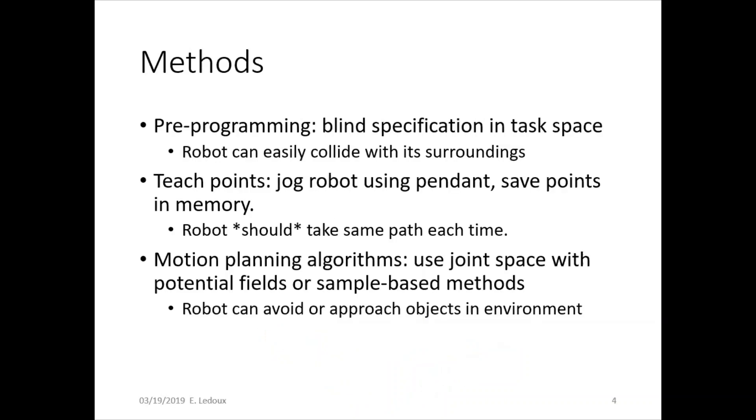There are several methods for this. Pre-programming is just blind specification in the task space. You make the robot go from one point to the next to the next. Here, a robot can easily collide with its surroundings if you just make it go from start to end directly.